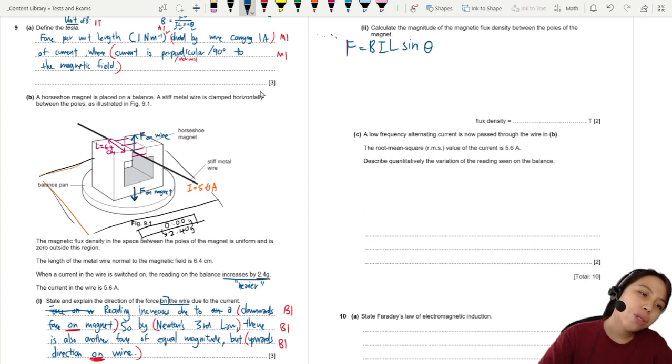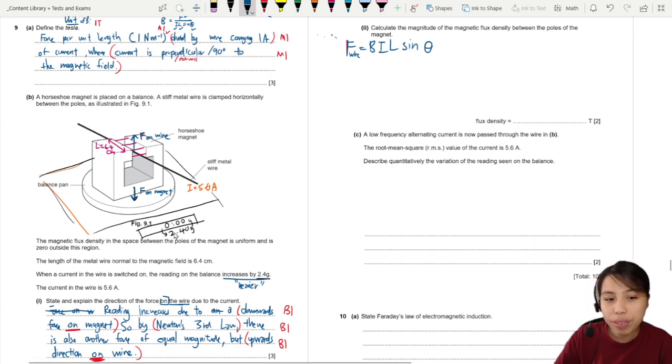And we are looking at force on wire, right? Let's look at the force on wire. How do we find the F on wire? I think what we can use is the change in mass. Our 2.4 grams right here. Suddenly, it becomes heavier by 2.4 grams.